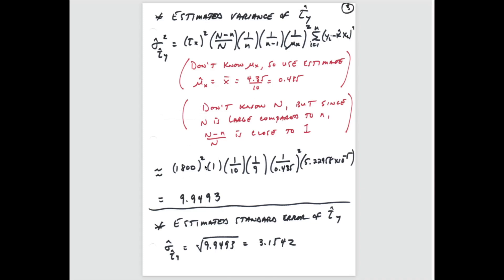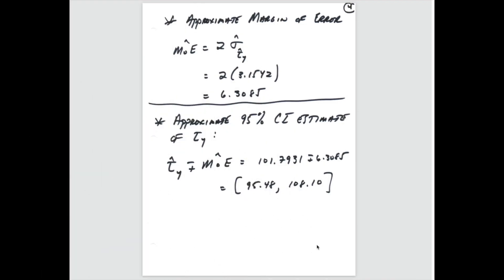Plugging in: τ_x squared, approximating (N − n)/N by 1, then 1/n times 1/(n−1) — so 1/10 times 1/9 — divided by the square of our estimate of μ_x (0.435 squared), times the sum of squared differences. This gives an estimated approximate variance of τ̂_y of 9.9493. Taking the square root gives the estimated standard error of τ̂_y as 3.1542.